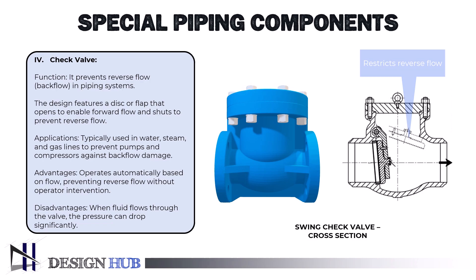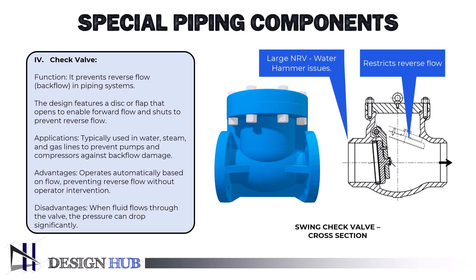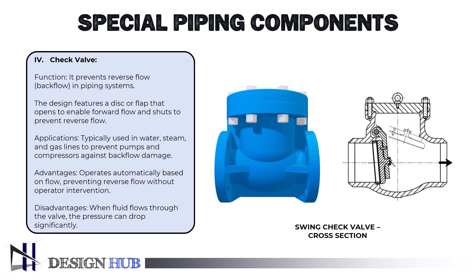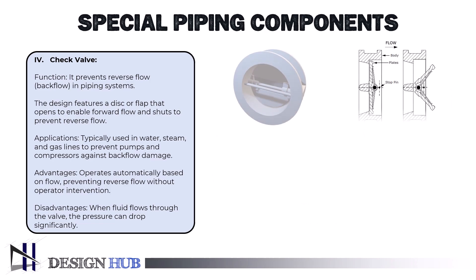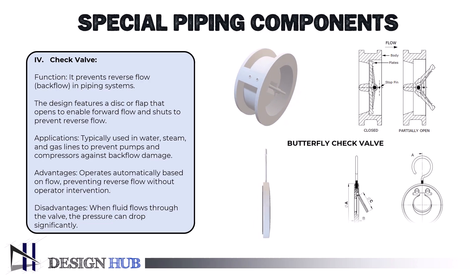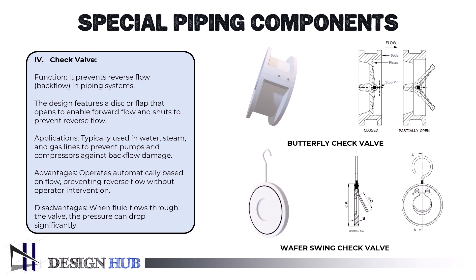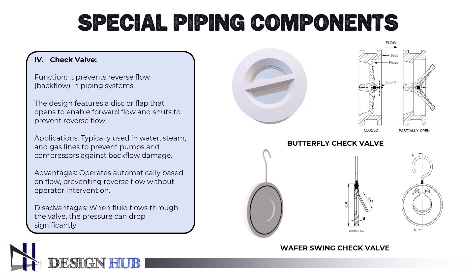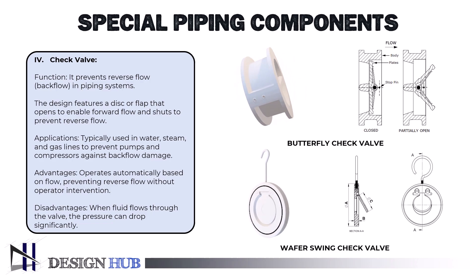Here we have a swing check valve. A swing check valve has a disc that swings on a hinge to block reverse flow or allow forward flow. The seat opening can be perpendicular or angled. Large check valves are often swing check valves and may cause water hammer issues. A butterfly check valve is not the same as a butterfly valve; instead, it functions as a check valve to halt backward flow, while a butterfly valve only regulates flow in one direction.